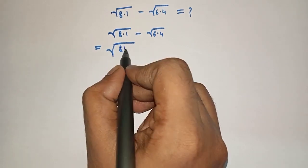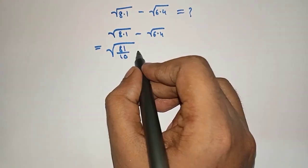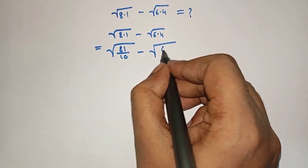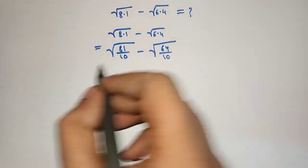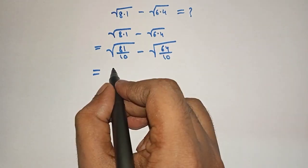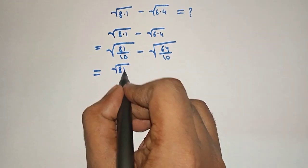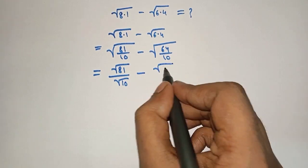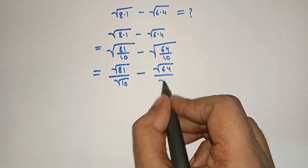Minus square root of 6.4 can be written as 64 by 10. Here we will split the square root, therefore square root of 81 by square root of 10 minus square root of 64 by square root of 10.